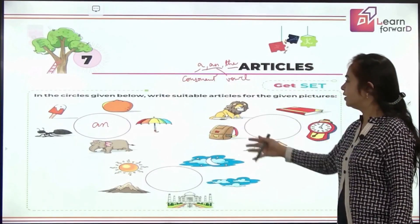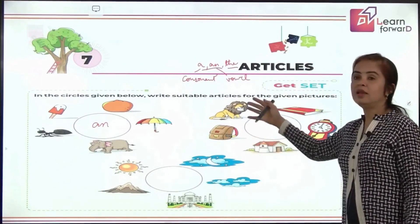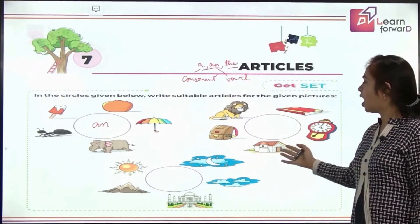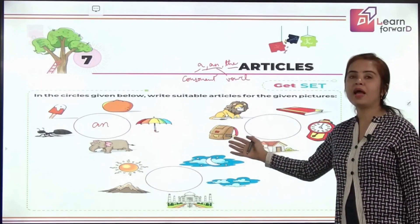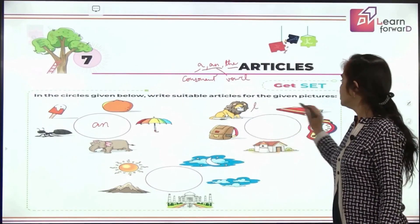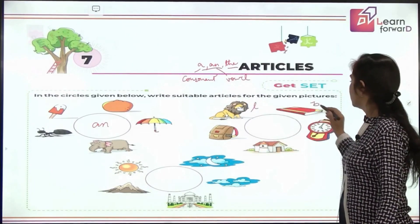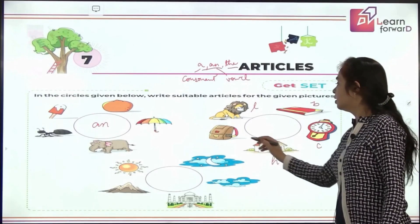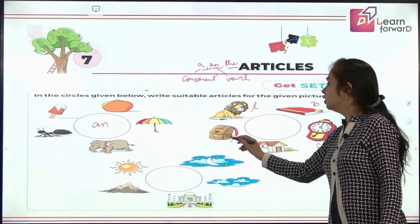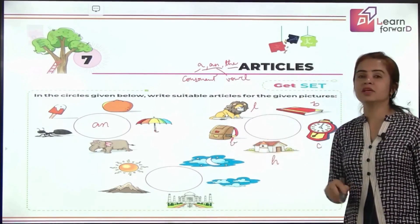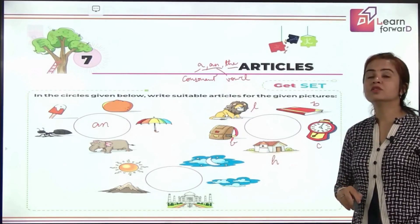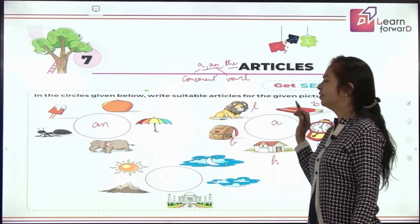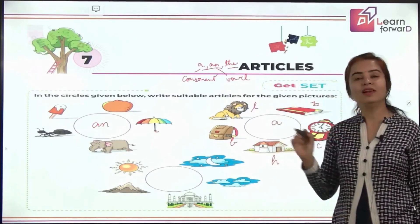Now let's look at these: lion, book, clock, house, bag. All of these are starting with a consonant sound. So what will we write here? Very good — the article a.